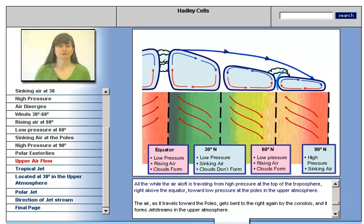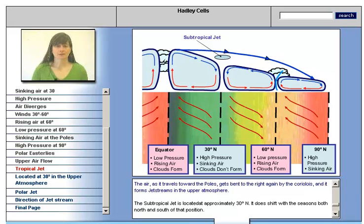All the while, the air aloft is traveling from high pressure at the top of the troposphere, right above the equator, towards low pressure at the poles in the upper atmosphere. As it travels towards the poles, it gets bent to the right again by Coriolis and forms jet streams in the upper atmosphere.